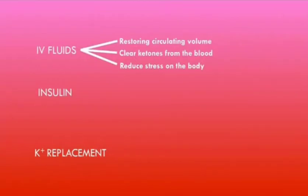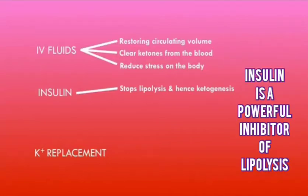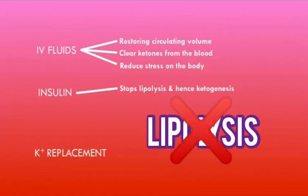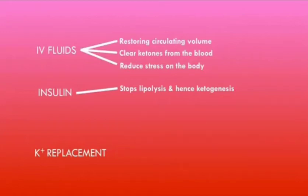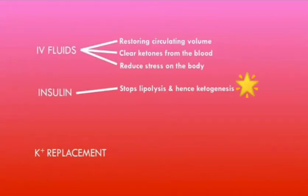Insulin is given for a number of reasons. The most important is that it stops lipolysis and hence ketogenesis. Insulin is a powerful inhibitor of lipolysis in the adipocytes, so if lipolysis is inhibited, adipocytes will not produce free fatty acids, which means the liver will not take up free fatty acids, ketone bodies will not be formed, and by inhibiting ketone body formation this will help to correct the metabolic acidosis in DKA.